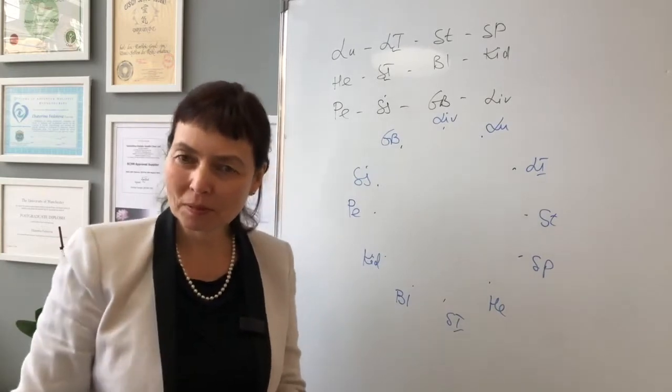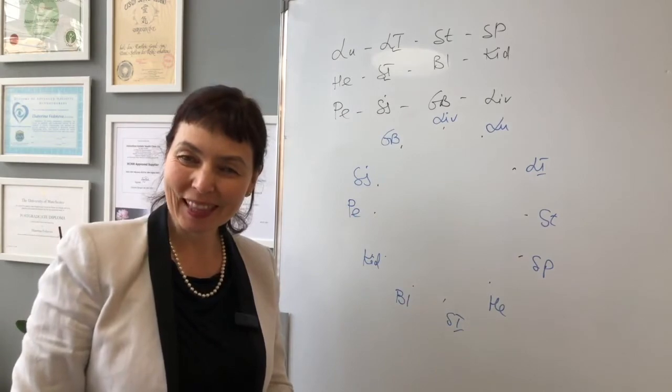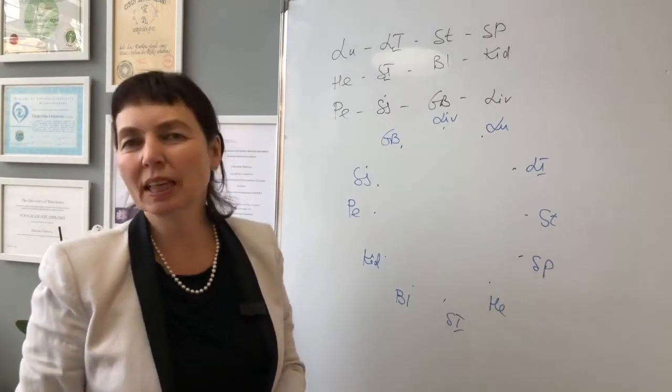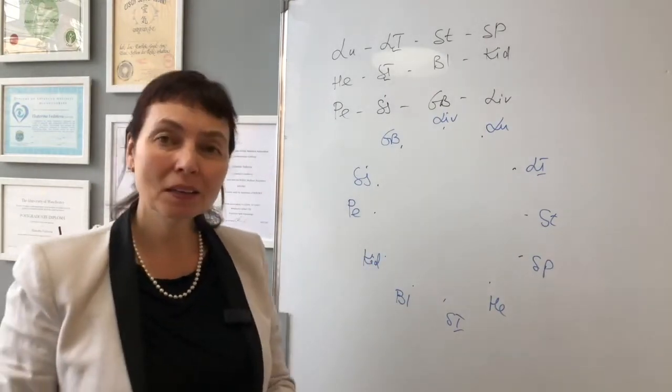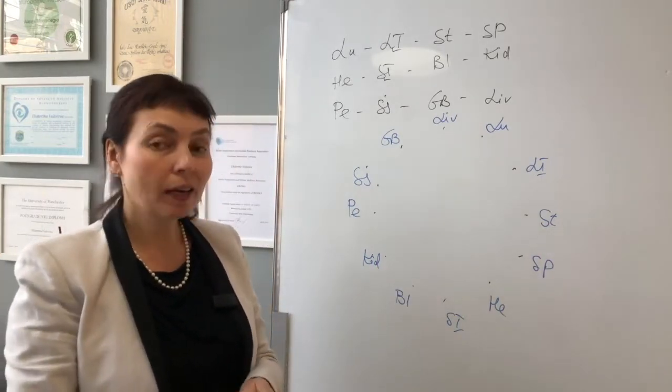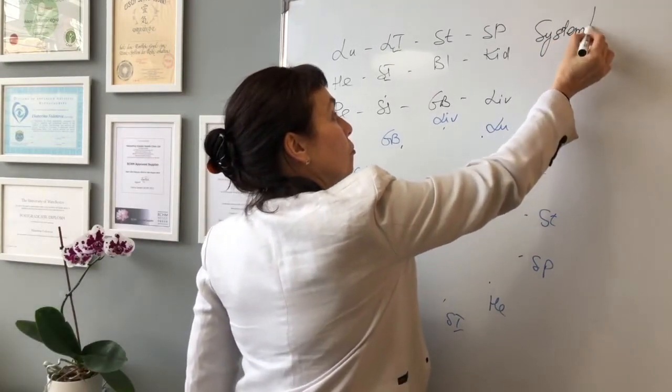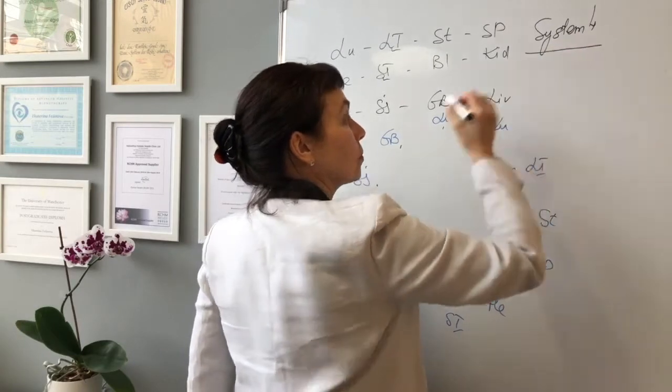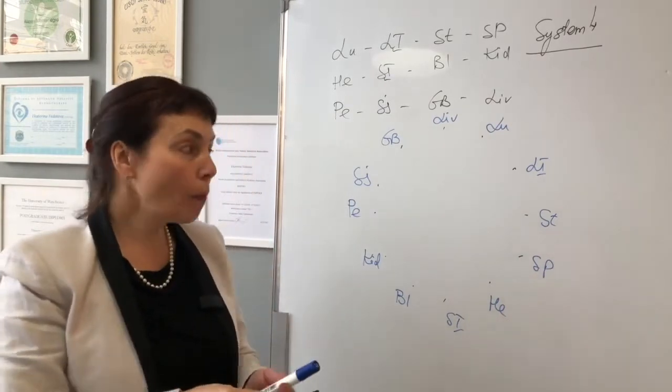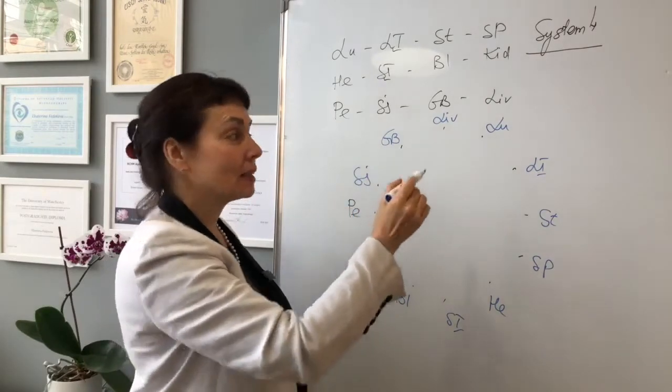What do we have? We have the Chinese clock. And if you learn this song by heart, which will take just a few minutes, you will never make a mistake in Chinese clock sequence. And now we are coming to System 4. The System 4 says that opposite branches in the Chinese clock balance each other.